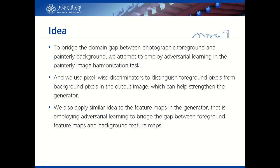To bridge the domain gap between photographic foreground and painterly background, we attempt to employ adversarial learning in the Painterly Image Harmonization task. We use pixel-wise discriminators to distinguish foreground pixels from background pixels in the output image, which can help strengthen the generator. We also apply a similar idea to the feature maps in the generator — employing adversarial learning to bridge the gap between foreground feature maps and background feature maps.